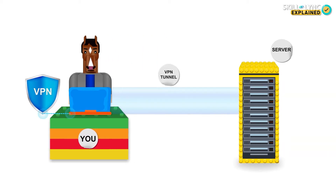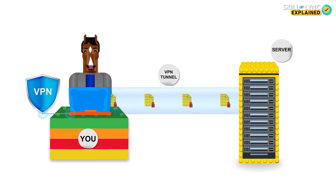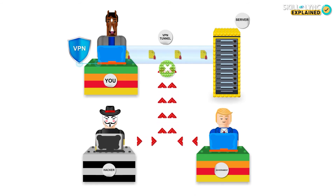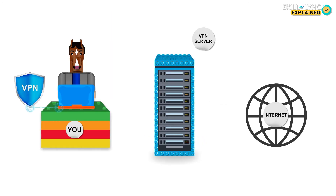When you browse the internet, the VPN software establishes a VPN tunnel between your device and the server. Tunneling is a process by which each unit of data that you send out is enclosed inside another unit of data. This unit of data will also be encrypted once it's inside the tunnel, making it very difficult for the ISP or any third party to read the data you send out.